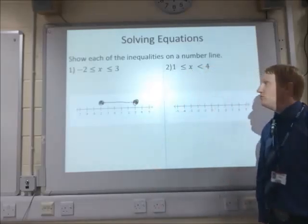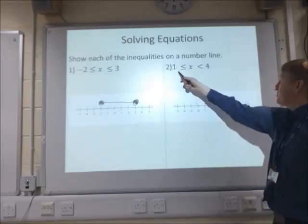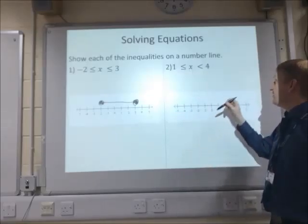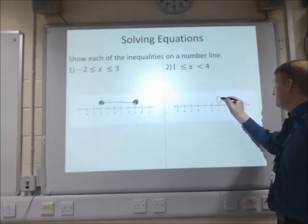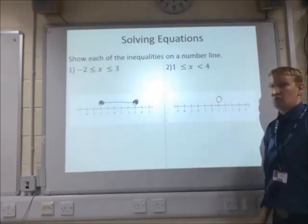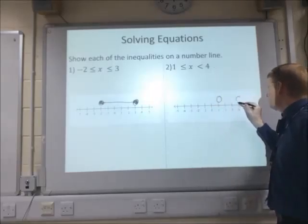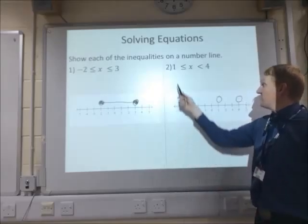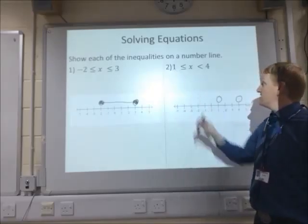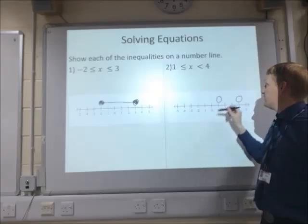For the second example, we're going to show that x is between 1 and 4. So again, at the 1, we put a circle. And at the 4, we put another circle. This time, we're going to shade in the circle that's at number 1 because it's or equal to the x there.